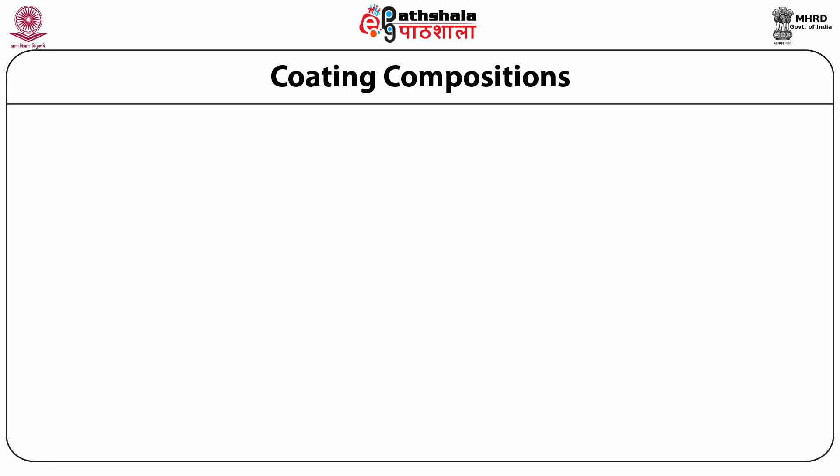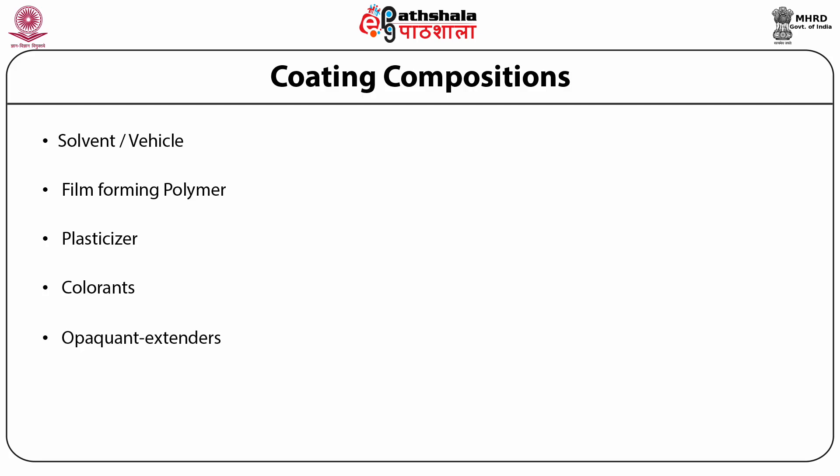Coating compositions: the coating may be a physical deposition of material on the tablet substrate or a continuous film with a wide variety of properties, depending upon the composition of the coating formulation. A usual coating composition consists of solvent (also called vehicle), film-forming polymer, plasticizer, colorants, and opaquents/extenders.